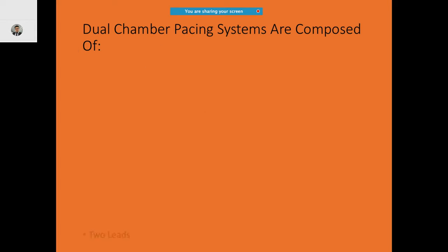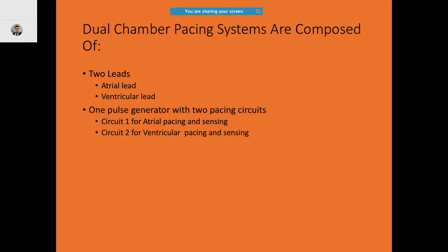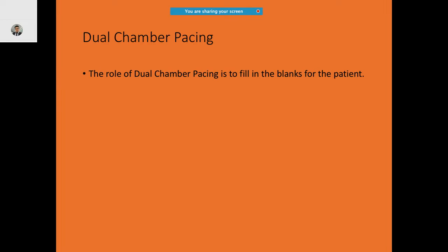If you restore AV synchrony, the patient will immediately feel better. Regarding the leads: the dual chamber pacemaker consists of two leads — atrial and ventricular — and one pulse generator with two circuits: one circuit for atrial pacing and sensing, and one for ventricular pacing and sensing.